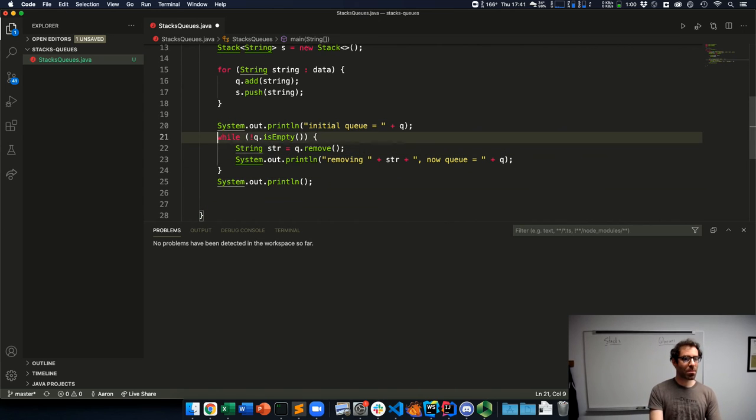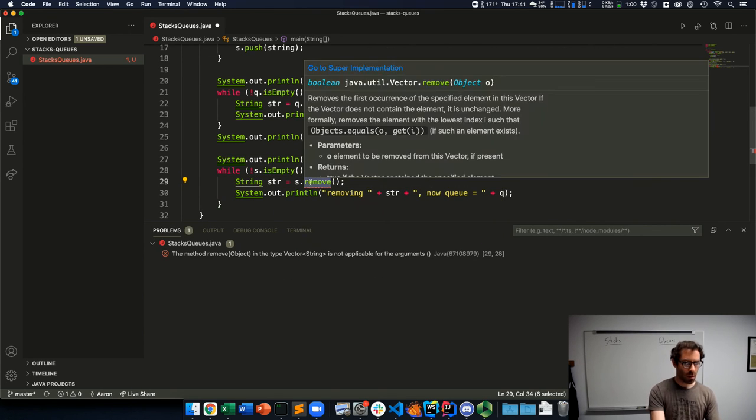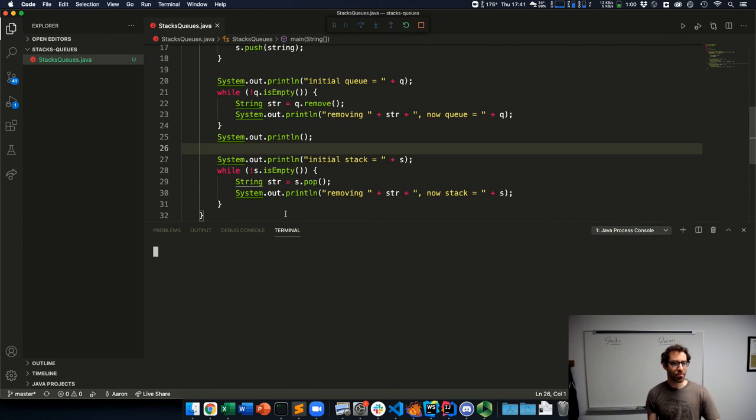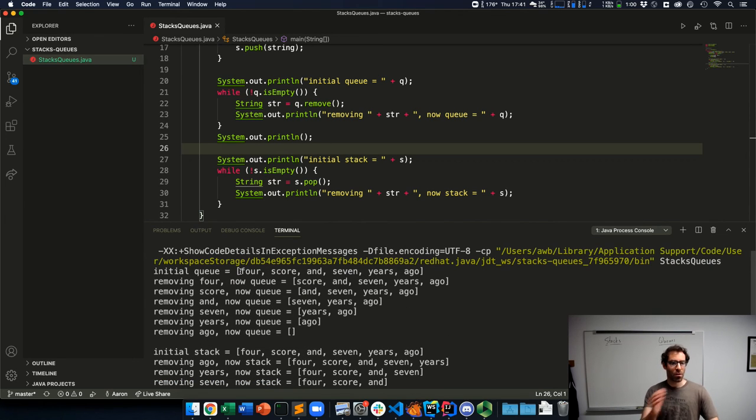Then I'll do the same thing with my stack so we can compare. Initial stack equals s. While s is not empty, we pop something off the stack and then print out a message about that. At this point, I can go ahead and run my code.